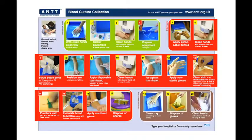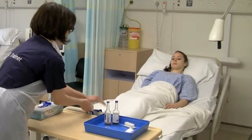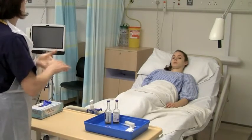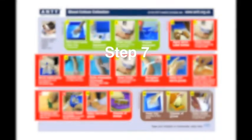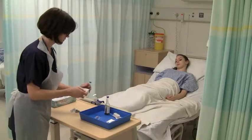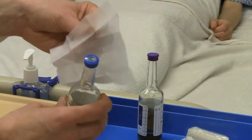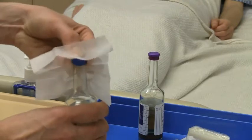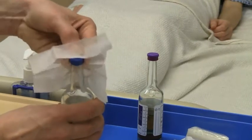Step 6: Clean your hands effectively with alcohol hand rub or soap and water. Step 7: Remove the tops of the culture bottles and scrub the injectable bungs for 15 seconds using one side of a fully opened 2% chlorhexidine and 70% alcohol wipe. Use non-touch technique to prevent contact with the injectable bungs.